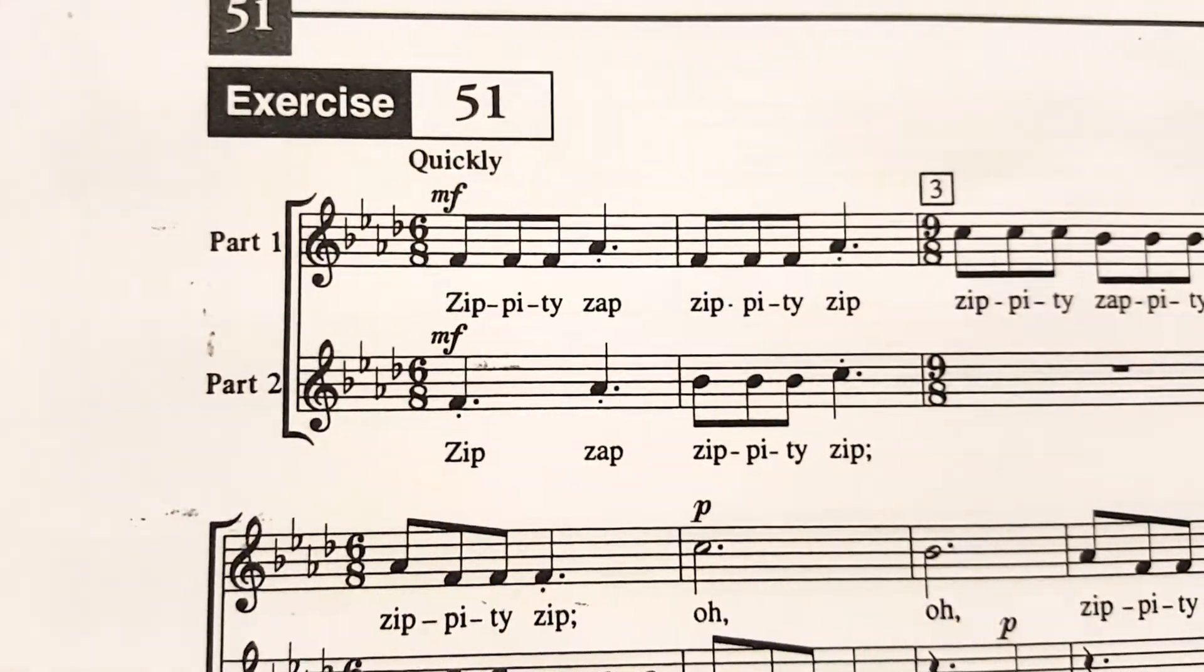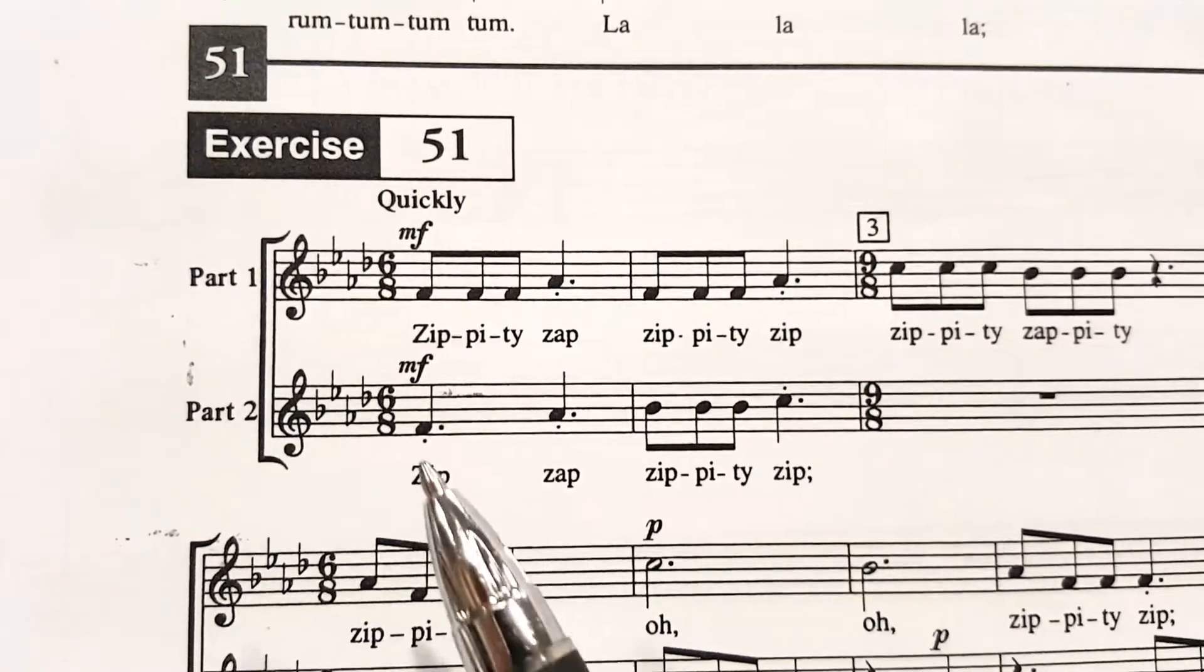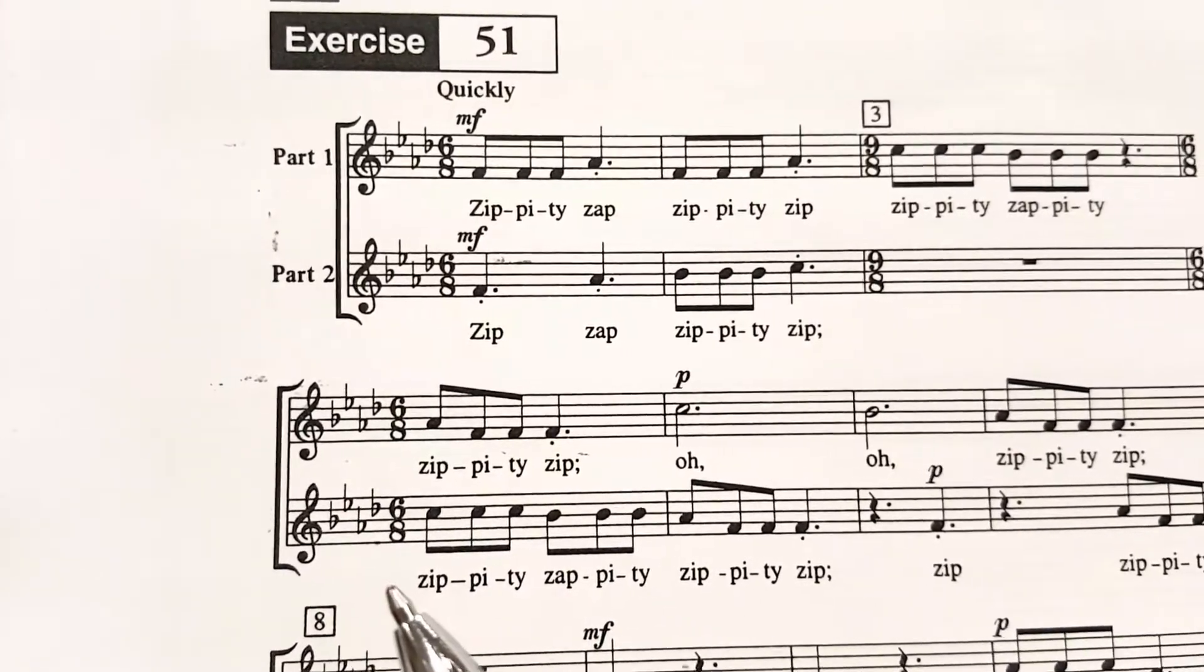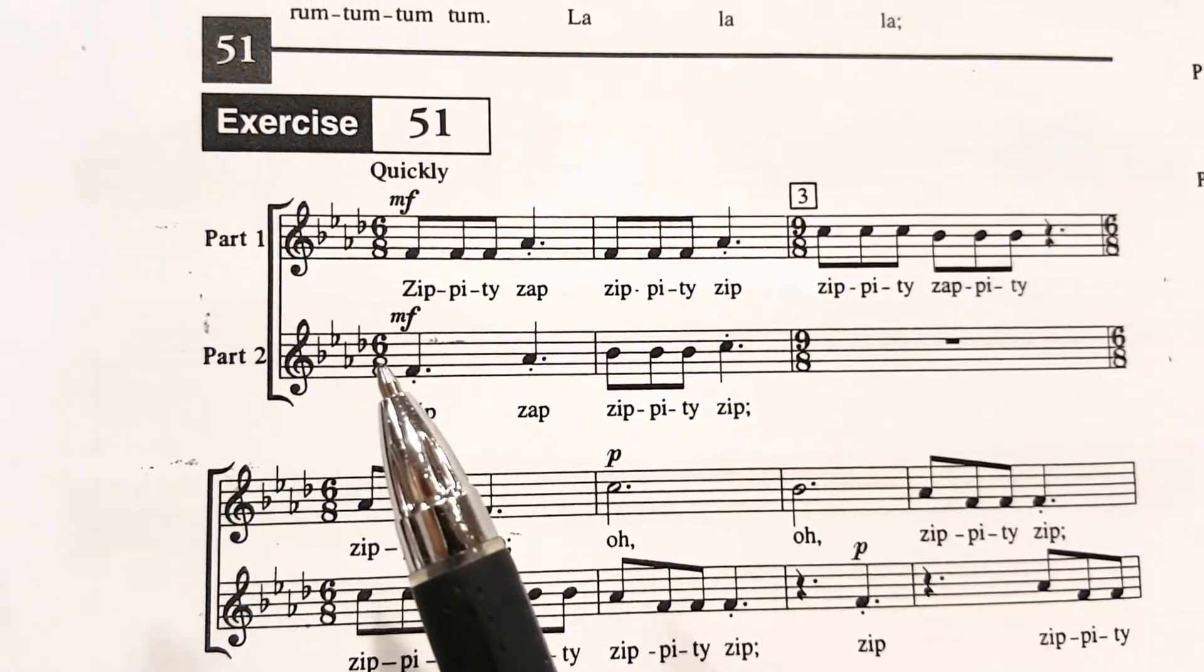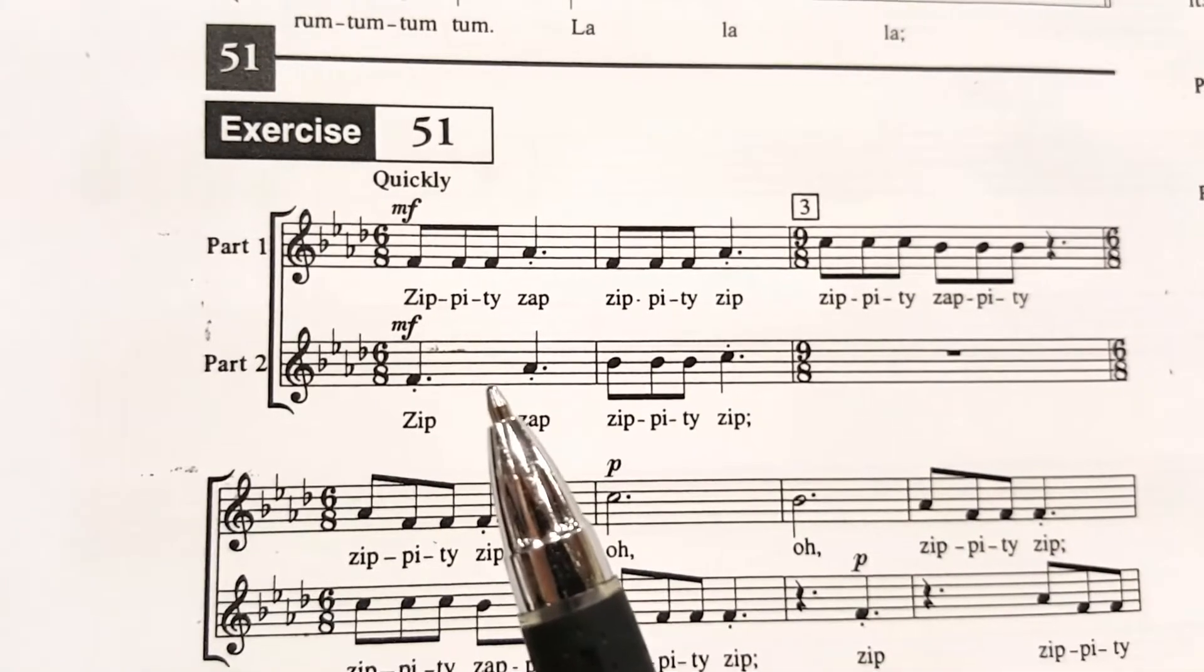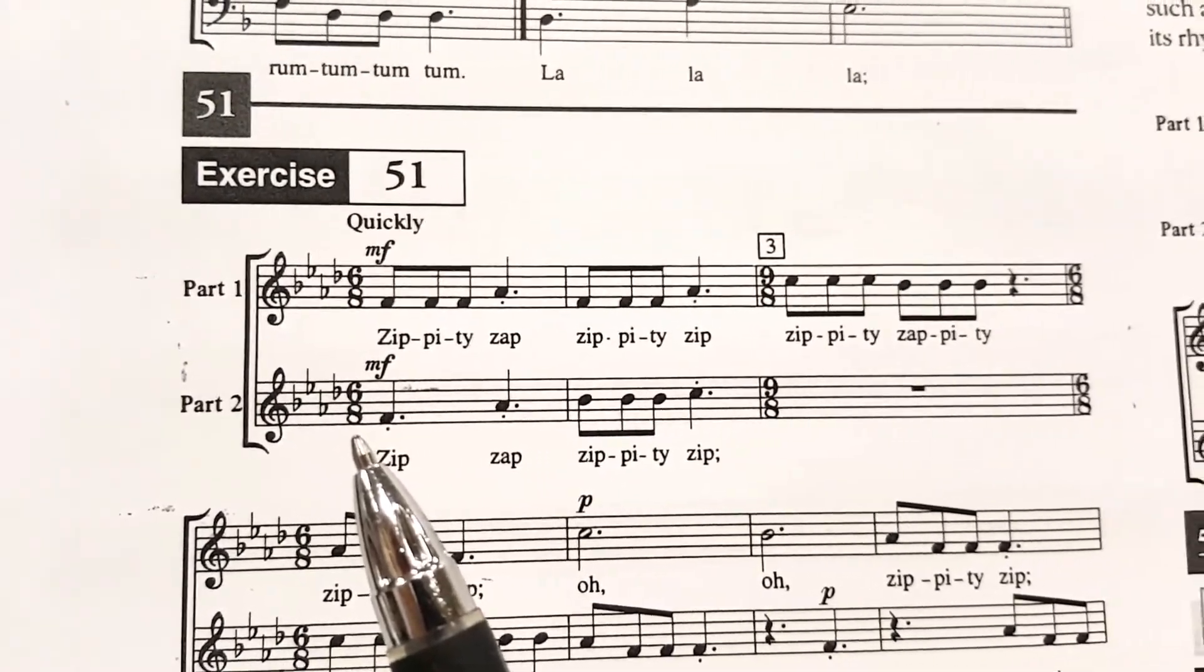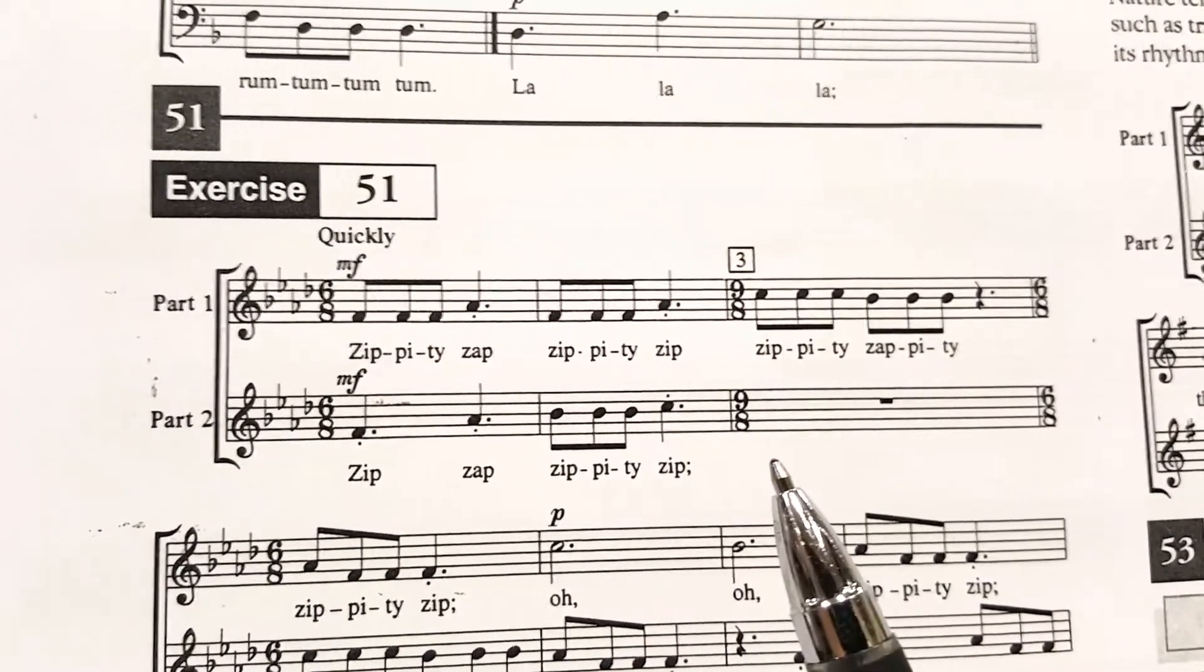This is an example out of the successful sight singing book. You notice that it starts off in six-eight time. Then it moves to nine-eight time. And then it jumps back to six-eight time. The key here is that the top number tells us how many beats there are per measure. So that would be six beats in each measure. But the eighth note is going to get the beat. So in this case, the eighth note is consistent not only in six-eight but in nine-eight as well.